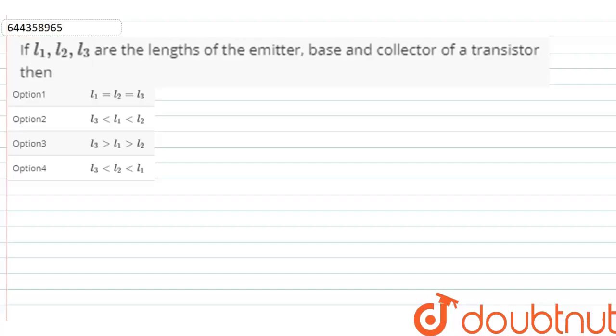The question is: if L1, L2 and L3 are the lengths of the emitter, base and collector of a transistor respectively, then which of the following options is correct? Option 1: L1 equals L2 equals L3.